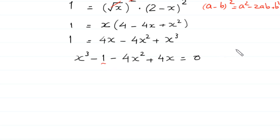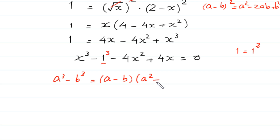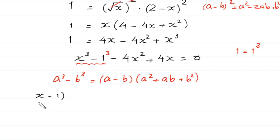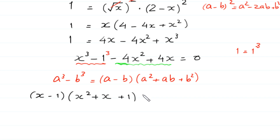Now this 1 is the same as 1 cubed. According to the algebraic identity, a cubed minus b cubed equals a minus b times a squared plus ab plus b squared. We factorize x cubed minus 1 cubed as x minus 1 times x squared plus x plus 1. From the remaining two terms, we factor out negative 4x, giving negative 4x times x minus 1 equals 0.